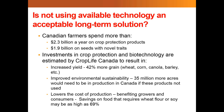There is also improved environmental sustainability — 35 million more acres would need to be in production here in Canada if we did not have access to and could not freely use these products. Additionally, crop protection tools lower the cost of production, benefiting growers and consumers. Savings on food products that require wheat, flour, or soy may be as high as 69% according to CropLife Canada. That emphasizes the importance of these tools that we currently have in our toolbox as growers.